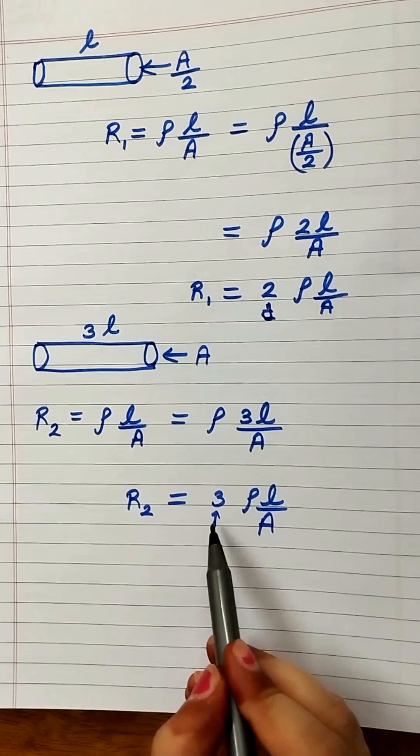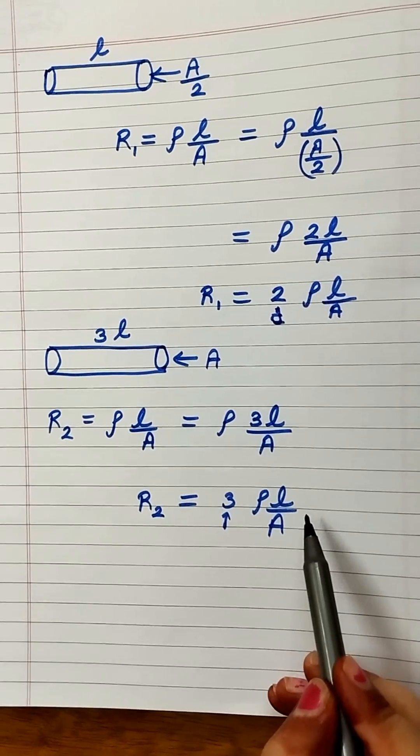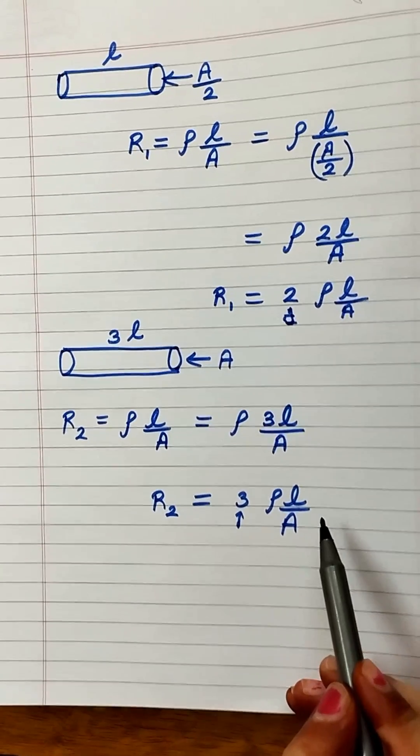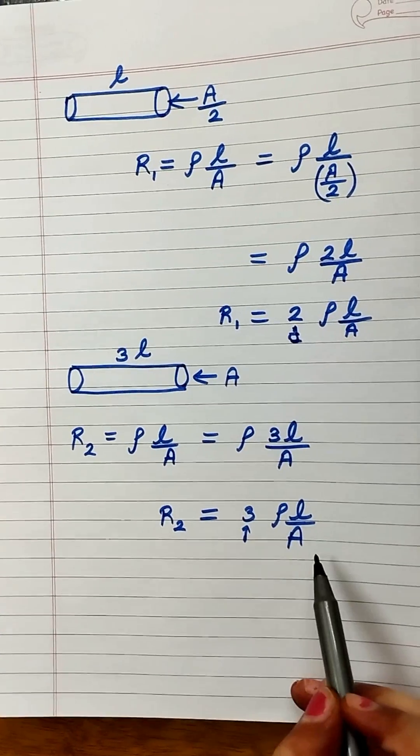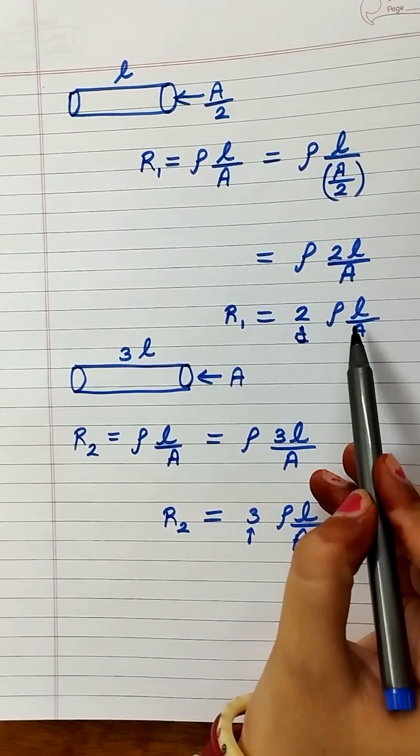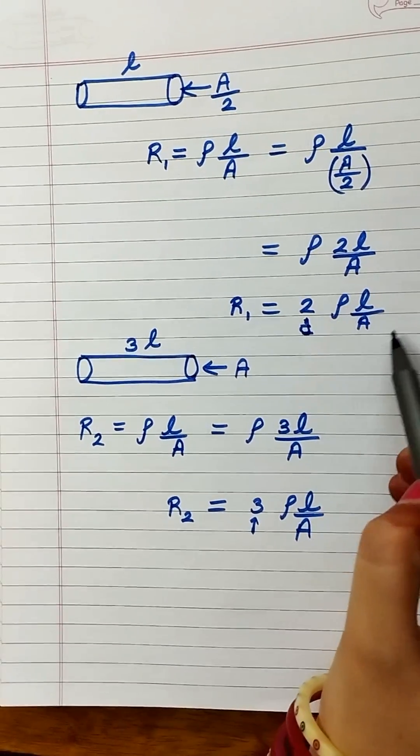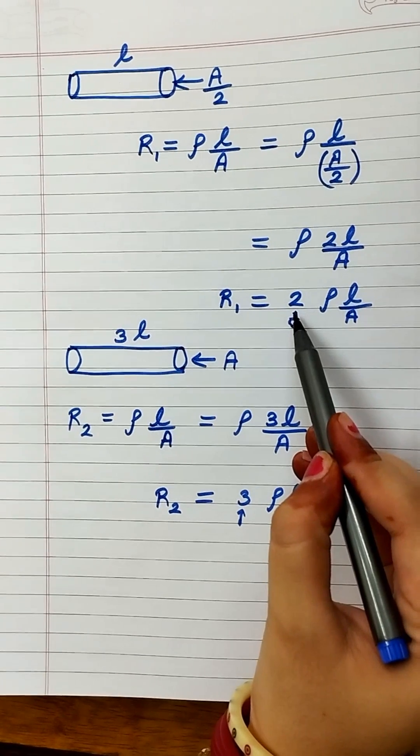For example, if the original resistance is 10 ohms, it will become 30 ohms for the second conductor and 20 ohms for the first. This is because the original resistance gets multiplied by the coefficient.